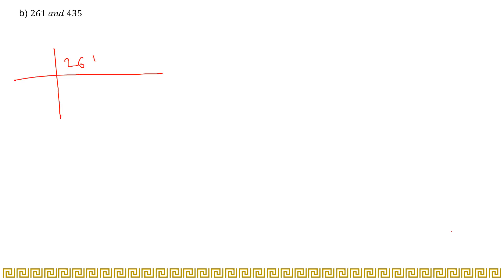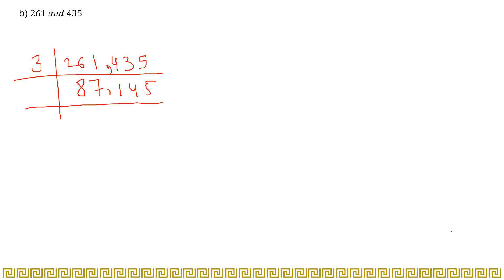Coming to the next part, which is 261 and 435. I think 3 can divide this number, so we try from 3. 3×87=261 and 3×145=435. Then dividing again by 3: 3×29=87 and we check if 3 can divide 145 — it cannot, so we write 145 as it is.